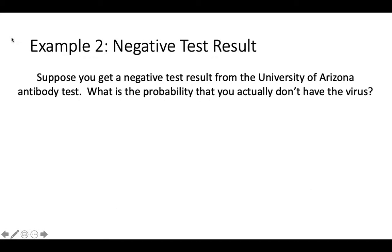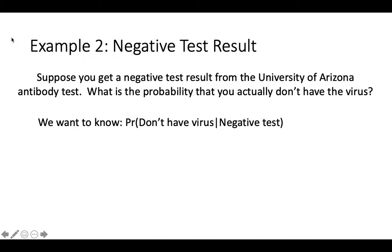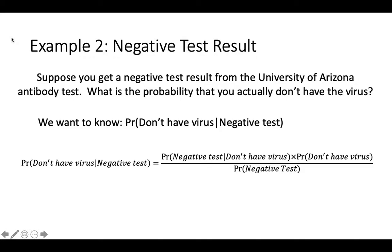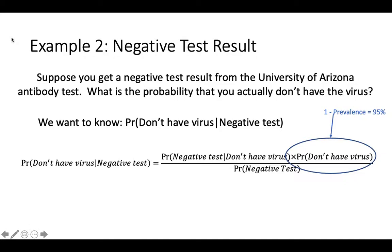We could ask the same question for a negative test result. Given that you test negative, what is the probability that you truly don't have the virus? Using Bayes' Rule, we can see that the probability that you don't have the virus given that you tested negative is the probability of having a negative test result when you don't have the virus, multiplied by the probability of not having the virus, and divided by the overall probability of a negative test. We know that the probability of having a negative test result when you don't have the virus is the specificity of the test, which is 99.1%, and the probability of not having the virus is 1 minus the prevalence, which is 95%.